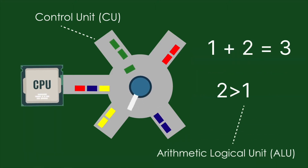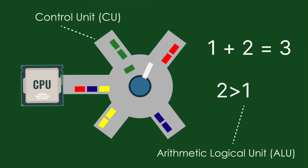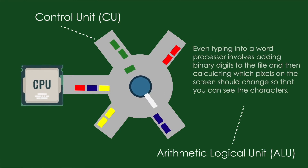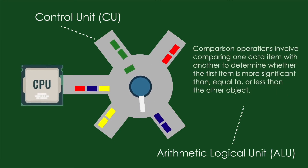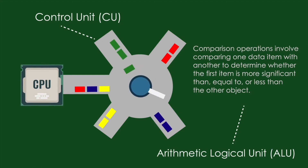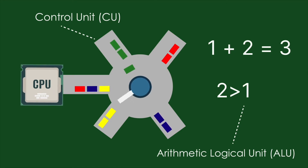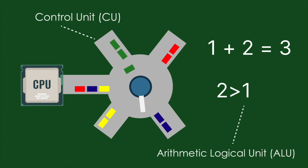The arithmetic and logic unit, or ALU, is where the CPU performs arithmetic and logic operations. Every task that your computer carries out is completed here. Even typing into a word processor involves adding binary digits to the file and calculating which pixels on the screen should change so you can see the characters. Comparison operations involve comparing one data item with another. For example, the arithmetic part deals with calculations like 1 + 2 = 3, and the logic part deals with comparisons like 2 is greater than 1.